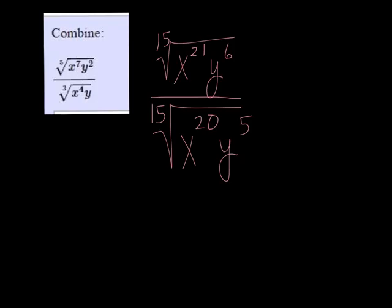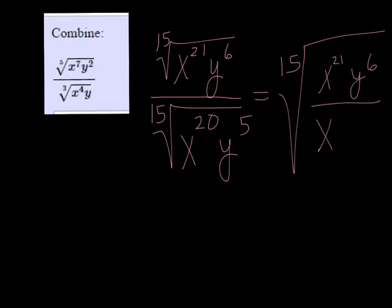So now we can put them together as root 15 of x to the 21st, y to the 6th, all over x to the 20th, y to the 5th, and we can simplify using the quotient rule.